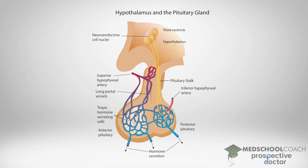First of all, there is what is called the hypothalamus-anterior pituitary axis. This includes neurons in the hypothalamus that secrete releasing hormones into the hypophysial portal system. From the hypophysial portal system, these hormones then act on the anterior pituitary gland to secrete a variety of different hormones.